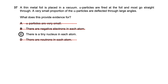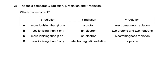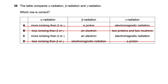Question thirty-eight compares alpha, beta, and gamma radiation. Gamma is electromagnetic radiation, so options with beta as electromagnetic are eliminated — B and D are wrong. Beta is not a proton, so options A is also eliminated. Option C correctly states alpha has greater ionizing power than beta and gamma, gamma is electromagnetic radiation, and beta radiation consists of electrons. Option C is the right answer.